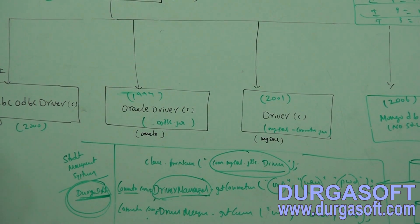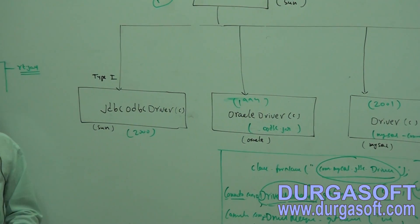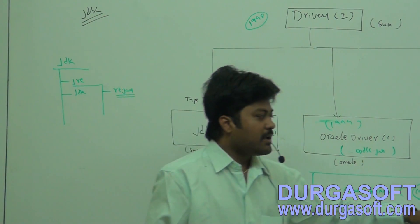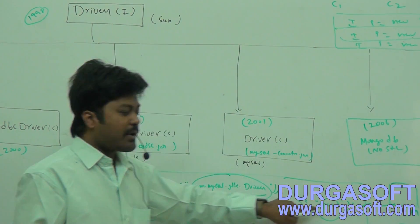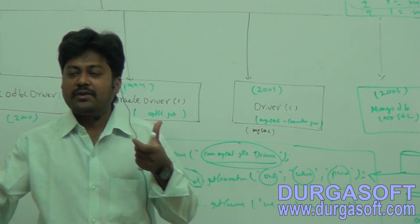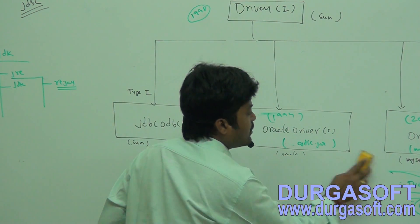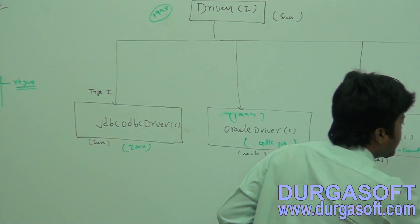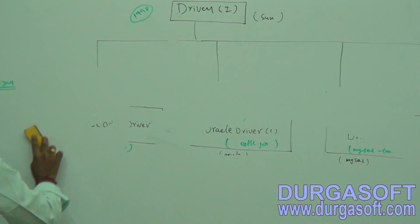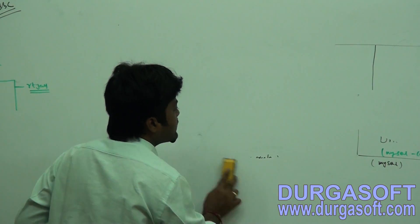Once you get a connection, you need to return that connection back to the database. When we get a connection from the database, the database releases one socket and provides the connection through it. Until the connection is closed, that socket stays in open mode. Therefore, you must close the connection before stopping your application. If you don't close connections, the database will throw 'listener refusing connections' exceptions after all connections are exhausted.